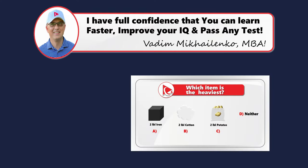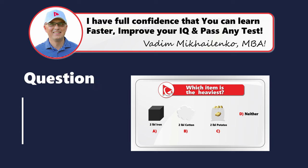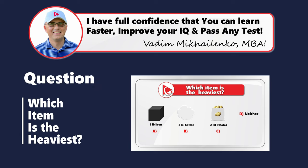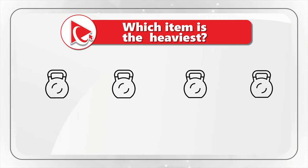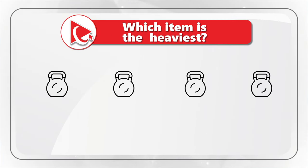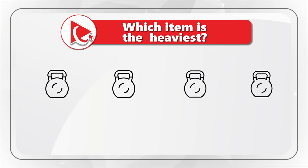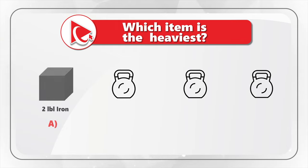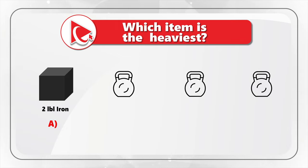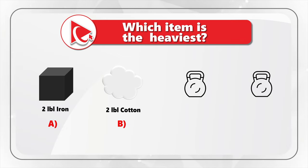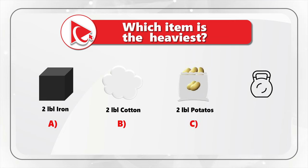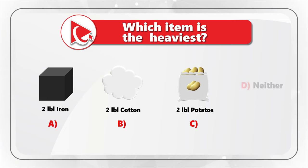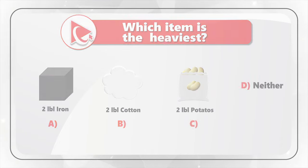Here's an absolutely brilliant and at the same time very tricky question, but I have full confidence that you'll be able to solve it. You need to determine which item is the heaviest. You are presented with four possible choices: Choice A — two pounds of iron; Choice B — two pounds of cotton; Choice C — two pounds of potatoes; and Choice D — neither one. Take a close look to see if you can come up with the answer.